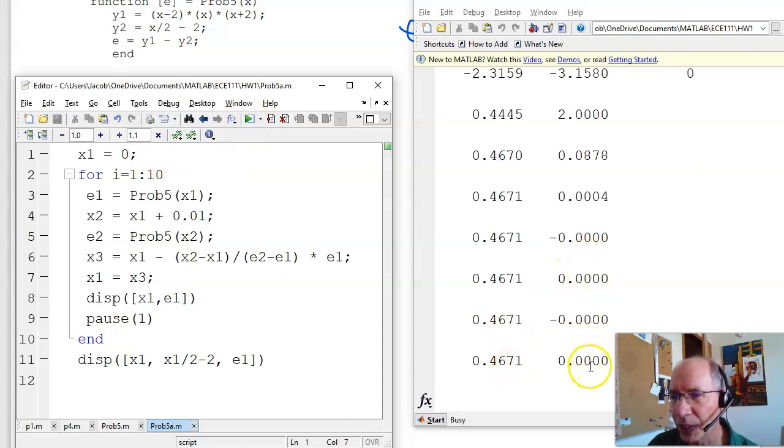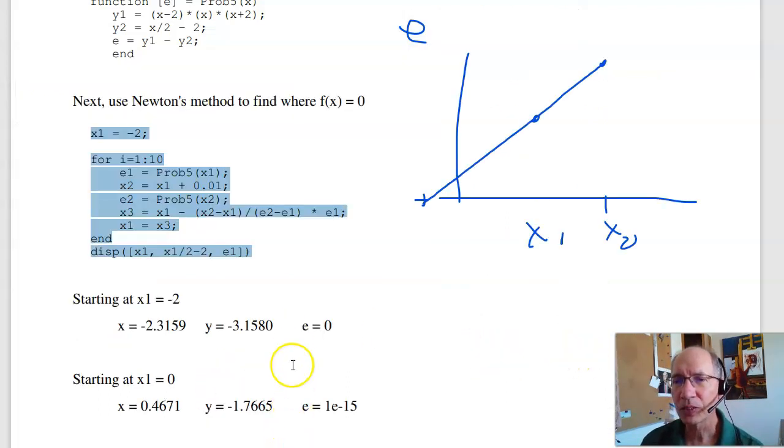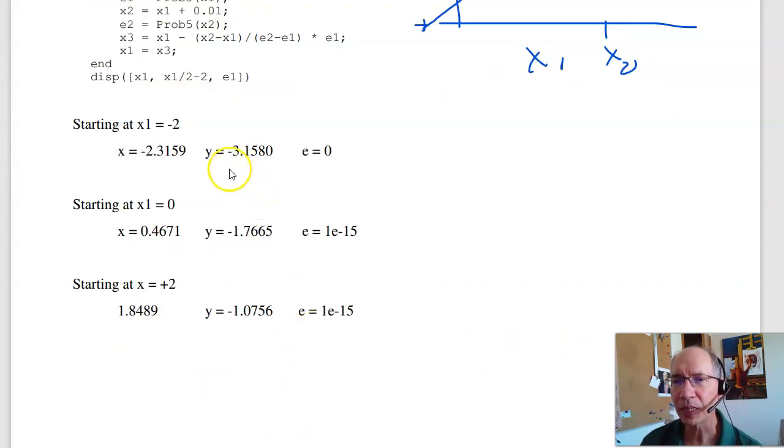Kind of a rule of thumb. If you ever see a method with the word Gauss or Newton on it, it's probably a pretty good method. So using numerical methods, I can find the actual solutions. In homework set number one, we use graphical methods and kind of estimated what the solutions are. Here, I've got them to at least four decimal places.